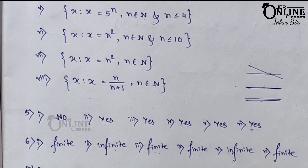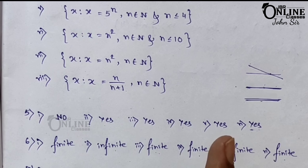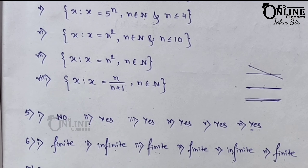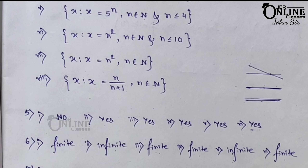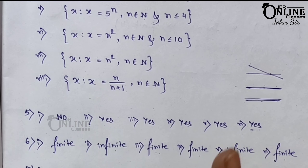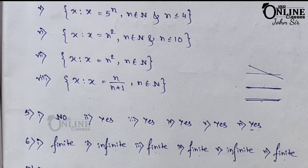Second one: a set containing just {0}. There is one element, which is zero, so the cardinal number is 1. Third one: A = {1, 2, 2, 1, 3}. The elements are 1, 2, and 3. There are only three distinct elements because set membership allows no repetition. So the cardinal number is 3.